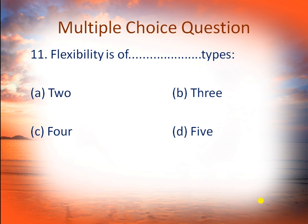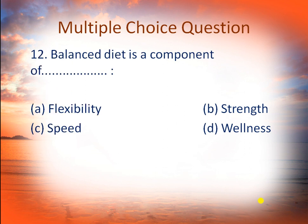Option A: 2, B: 3, C: 4, and D: 5. Flexibility is the maximum range of movement of our joints, and the types of flexibilities are two. So option A is the right answer. These two types are active and passive flexibility.